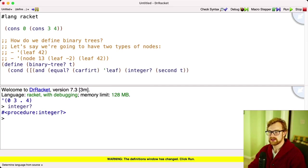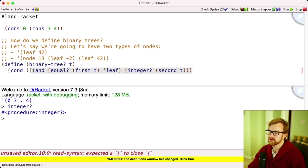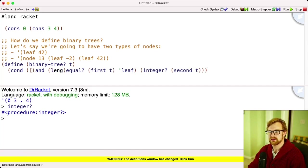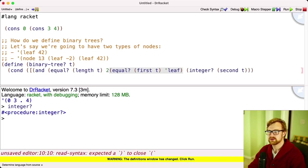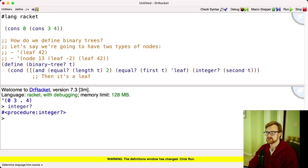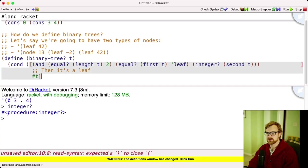So if all these things are true, then it's a leaf. And we're going to return true. Otherwise, then length is going to be what? It's going to be four. And then this first element has to be an integer. The second one has to be some other binary tree. And the third one has to be some other binary tree here.